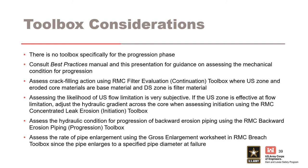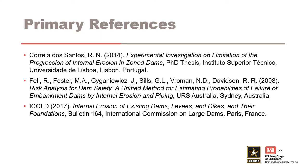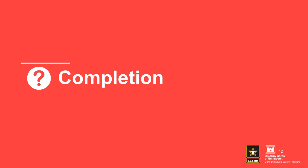Assess the rate of pipe enlargement using the gross enlargement worksheet in the breach toolbox since the pipe enlarges to a specified diameter at failure. The primary references used to develop this presentation are listed on the following slides. This concludes the presentation on progression. Thank you for your attention.